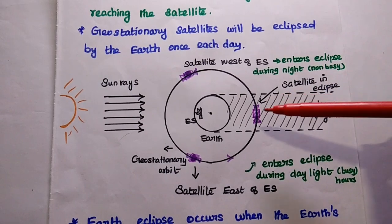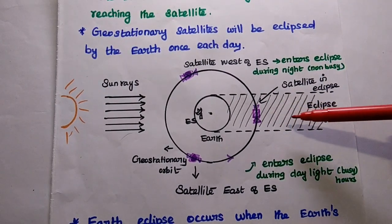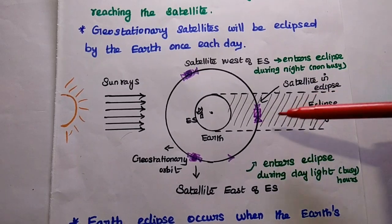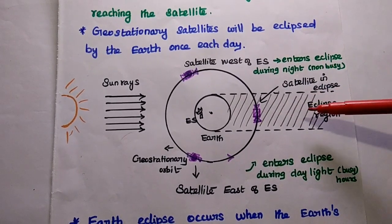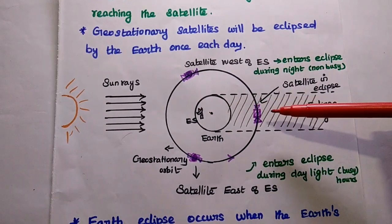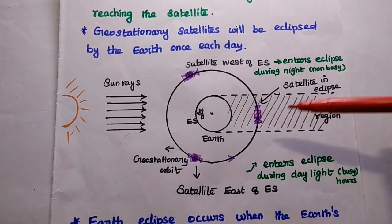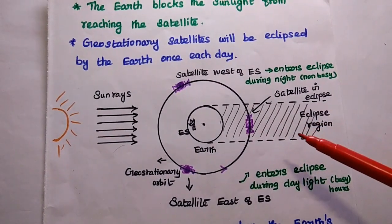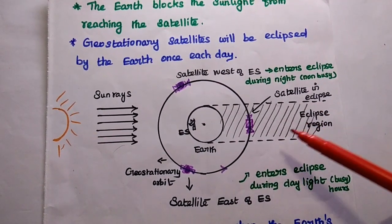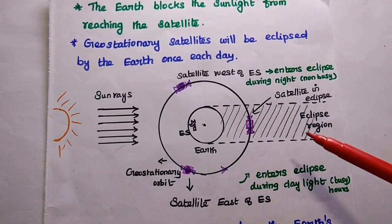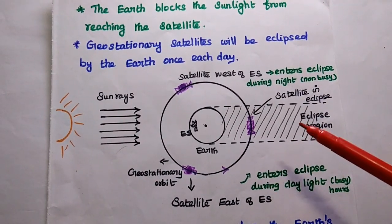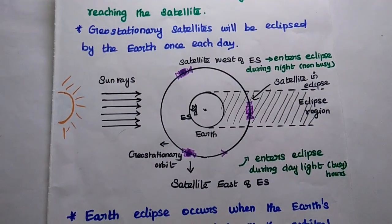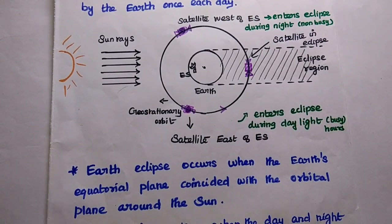This is the region where the satellite enters into the earth's shadow. Whenever the satellite is present in the eclipse region, there is no solar energy. As we know, the satellite works based on solar energy, so during the eclipse period the solar cells do not work. At that time, the satellite obtains power from batteries, which are used to provide the required power for satellite operation.